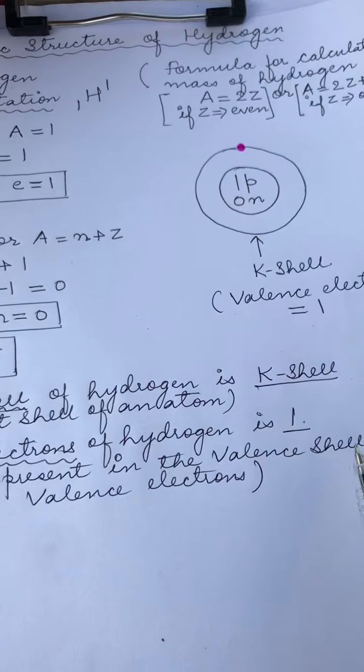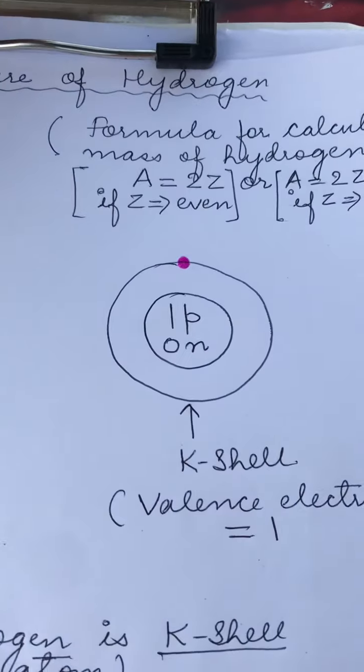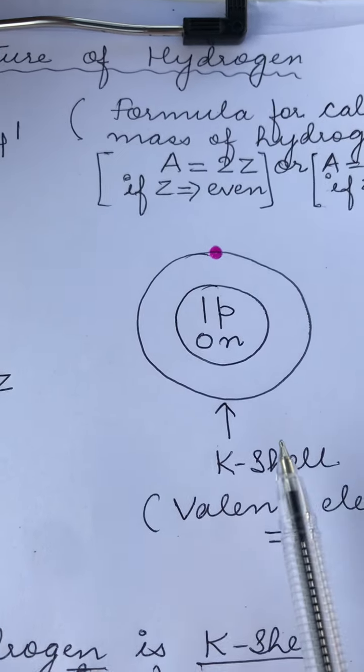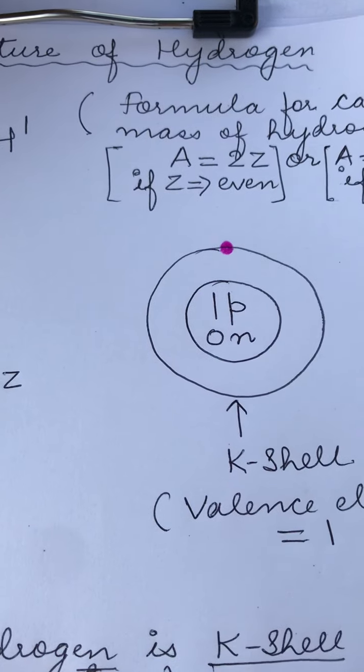Therefore, the valence electron of hydrogen is 1. So this is how we actually come to the conclusion and come to draw the structure of hydrogen atom.